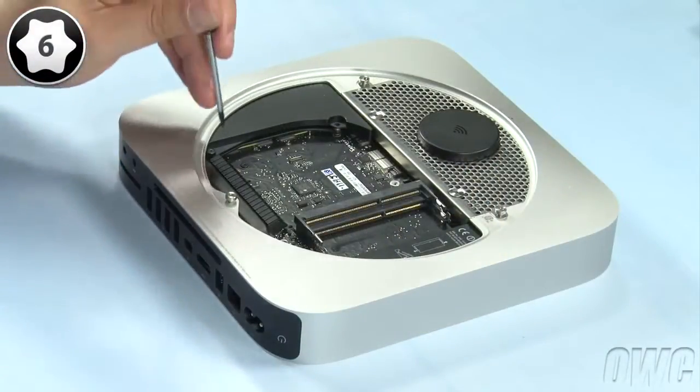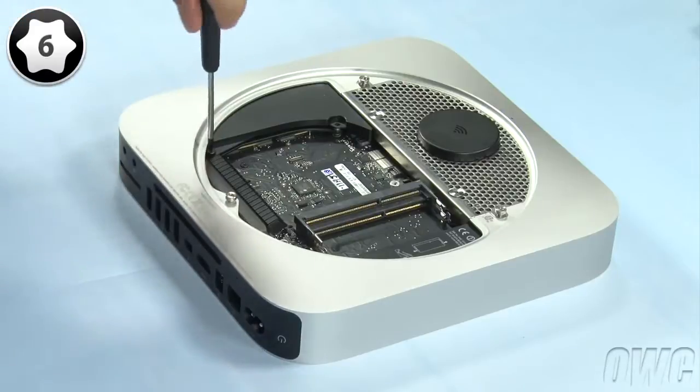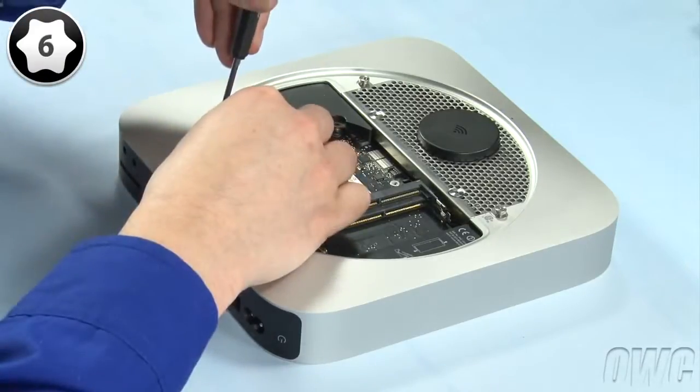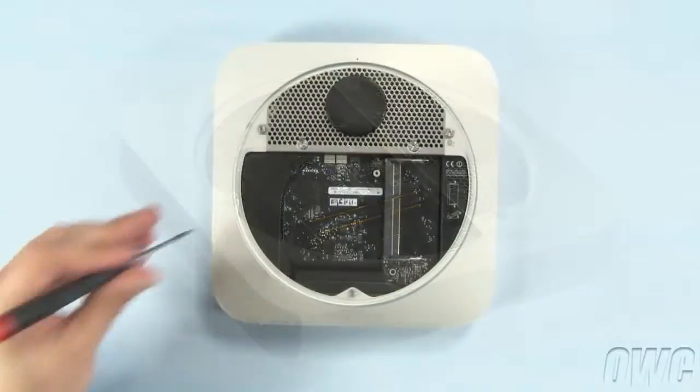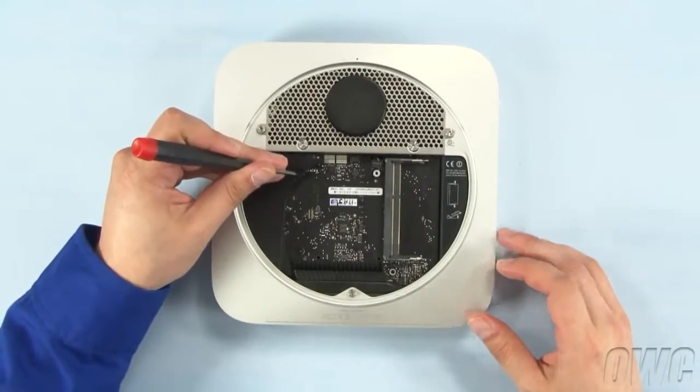Next, we need to remove this cowling. Detach this screw near the bottom. Then, gently slide the cowling out and set it aside.